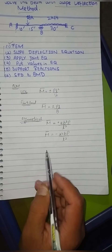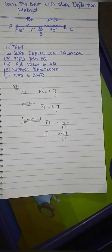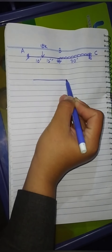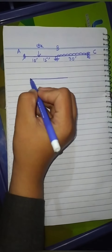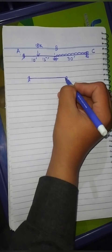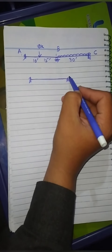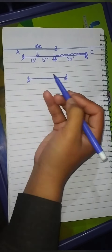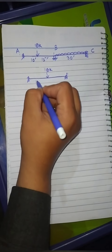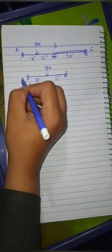Now the first part is the beam. We will divide it. Here, A to B. This side is a roller but we will consider it fixed. This side is fixed. And this side is fixed. The distance here is 15. This is for span A to B.